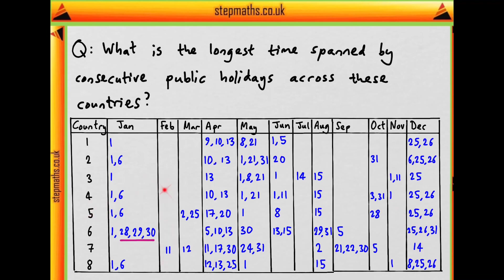Moving on, February and March clearly won't offer a longer span. But in April we have lots of holidays. We have a 9th and 10th which could be the start of a span, and no 8th so the lowest date in the span will be the 9th. There's an 11th in country seven, then a 12th and 13th in country eight. There are no 14s, so the longest span in April is five days — from the 9th to the 13th. This looks promising, but let's carry on just in case.